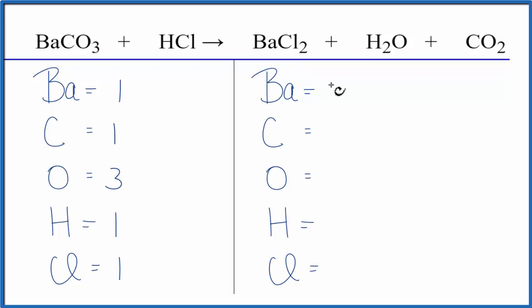On the product side, we have one barium, one carbon. Oxygens, we have one here, plus we have the two here. So we have three oxygens, two hydrogens, and then two chlorines.